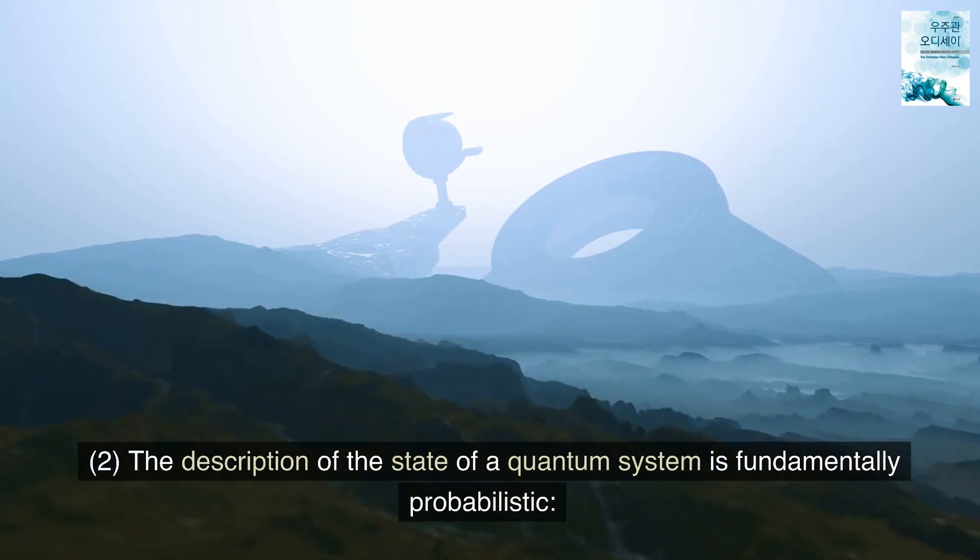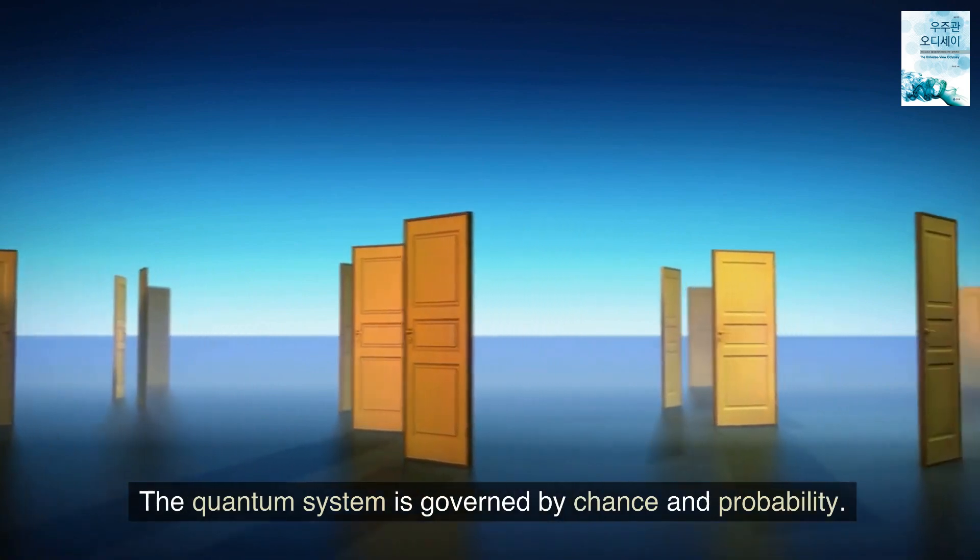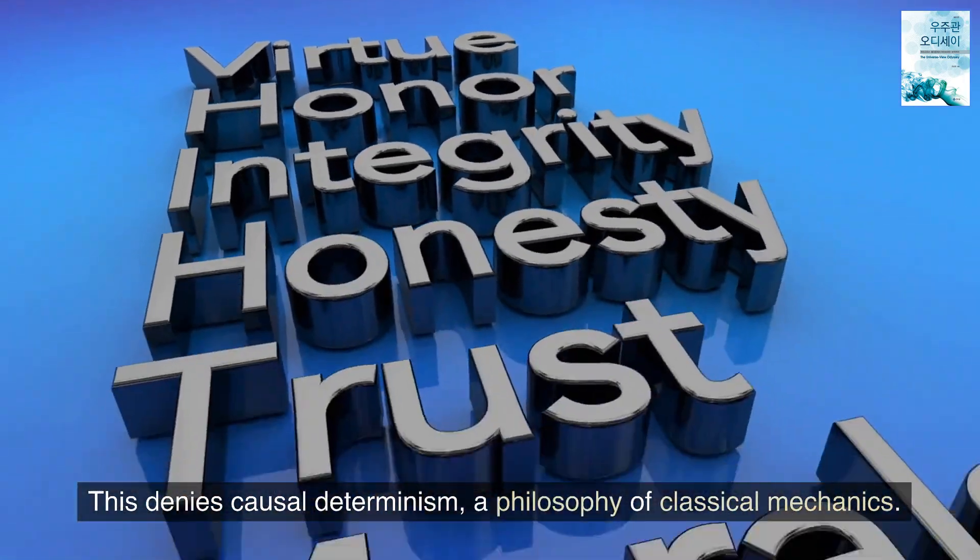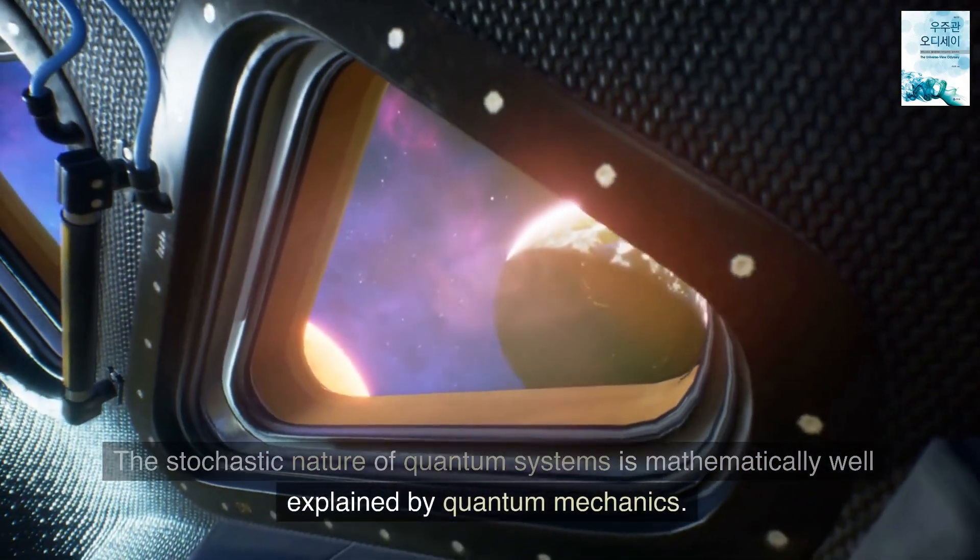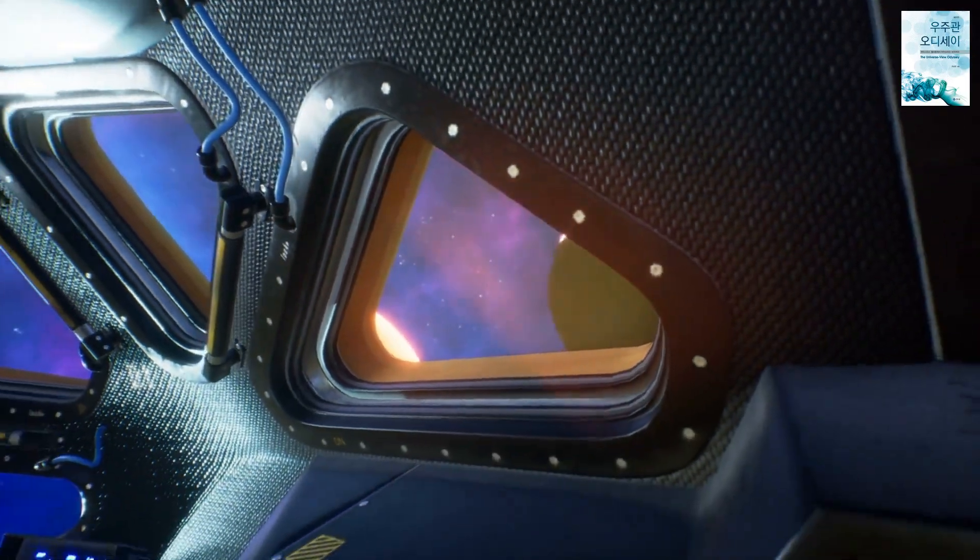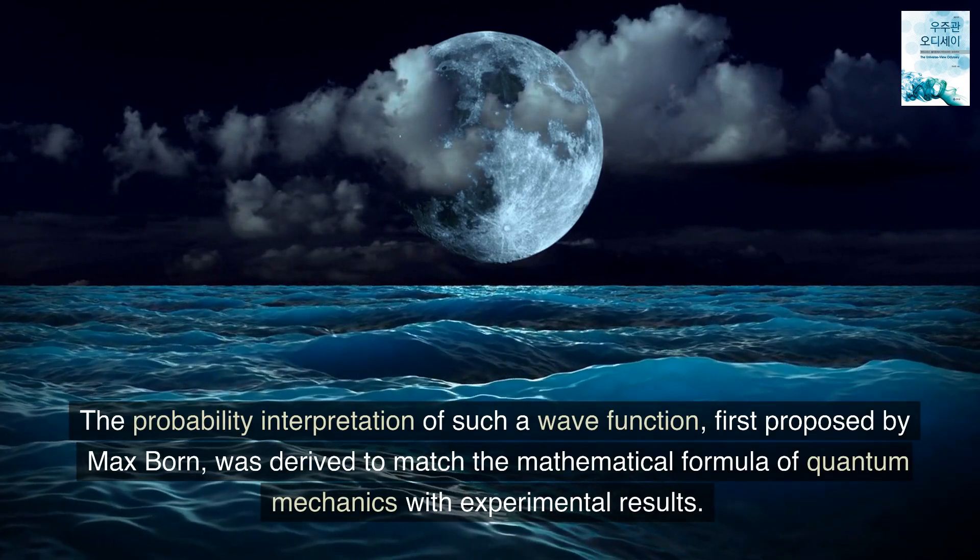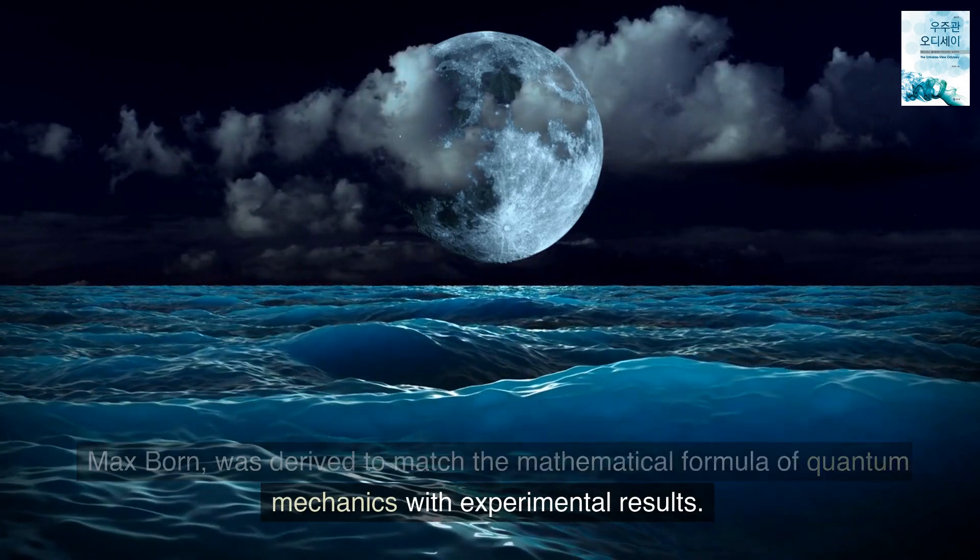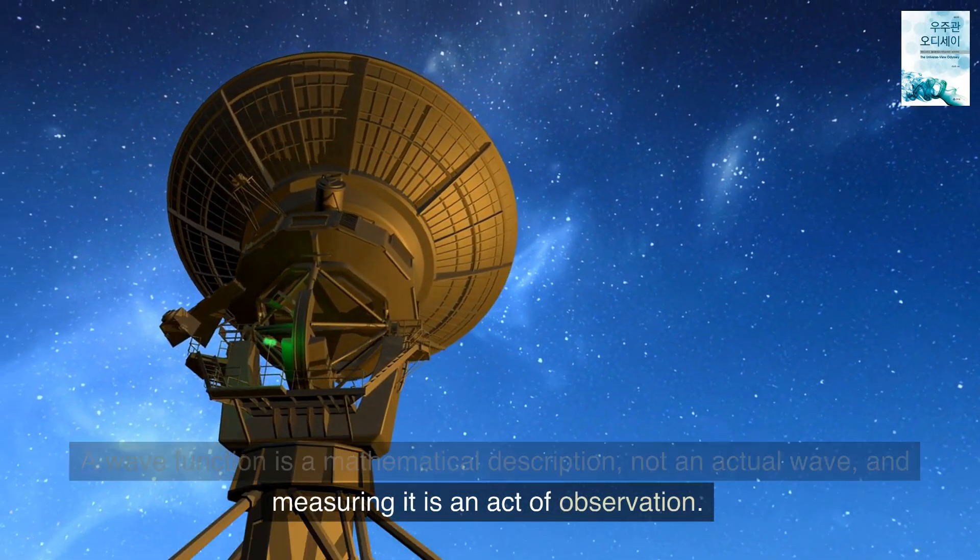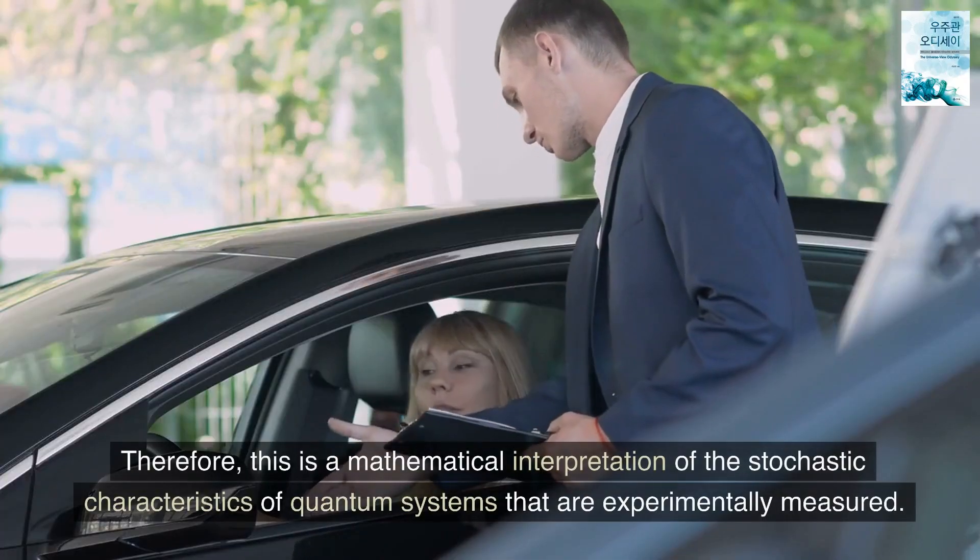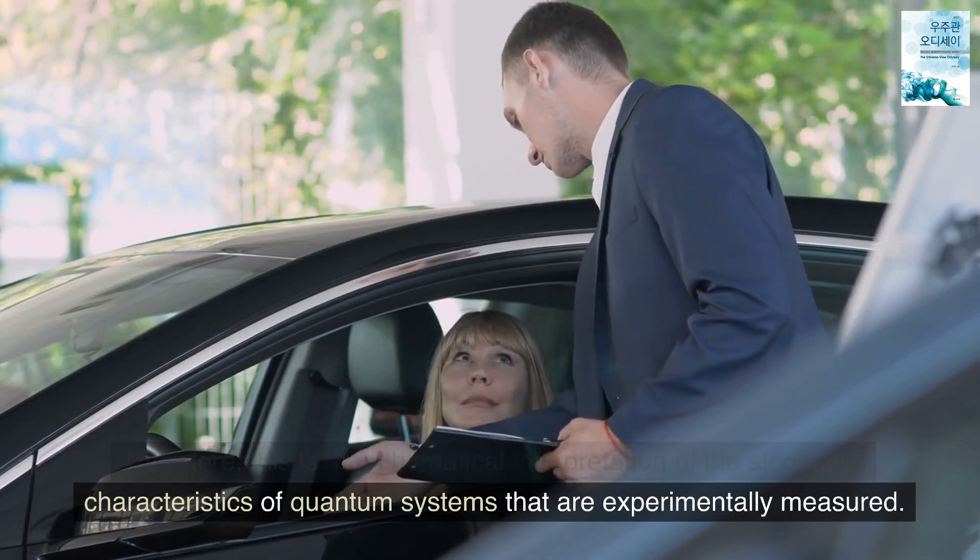Two, the description of the state of a quantum system is fundamentally probabilistic. The quantum system is governed by chance and probability. This denies causal determinism, a philosophy of classical mechanics. The stochastic nature of quantum systems is mathematically well explained by quantum mechanics. The probability interpretation of such a wave function, first proposed by Max Born, was derived to match the mathematical formula of quantum mechanics with experimental results. A wave function is a mathematical description, not an actual wave, and measuring it is an act of observation. Therefore, this is a mathematical interpretation of the stochastic characteristics of quantum systems that are experimentally measured.